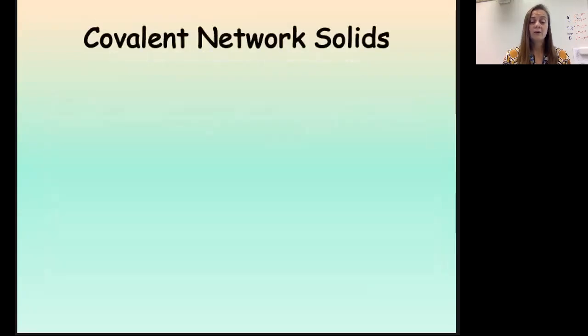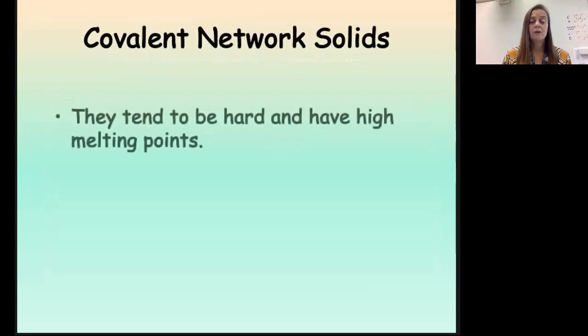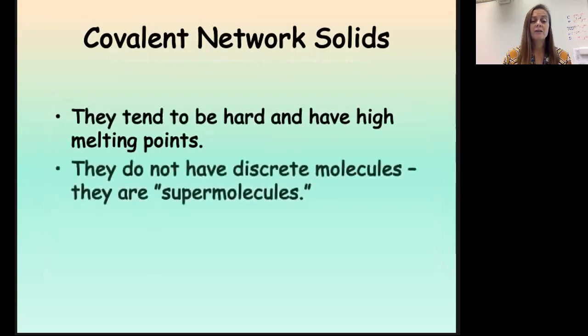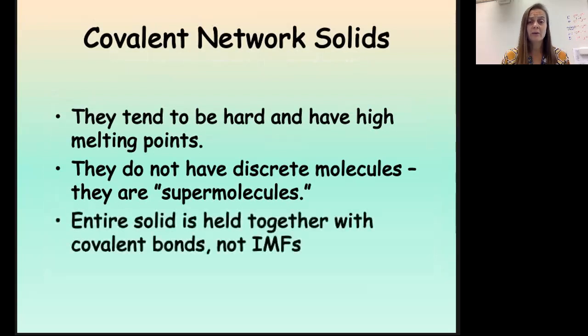Okay, so the next type we're going to talk about is what we call covalent network solids. Covalent network solids tend to be very hard and have high melting points. They do not have discrete molecules. We can think of them as super molecules made up of billions and trillions of atoms, all covalently bonded together. So the entire solid is held together with covalent bonds, not with intermolecular forces.